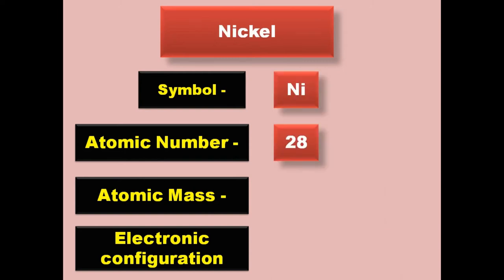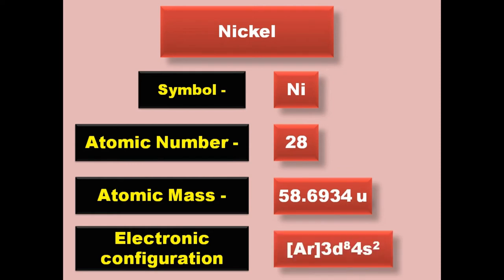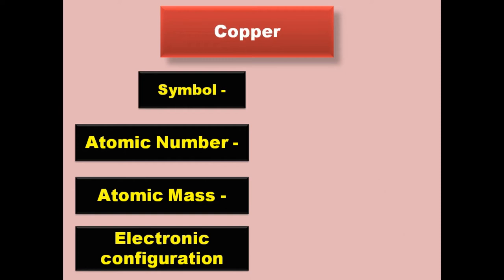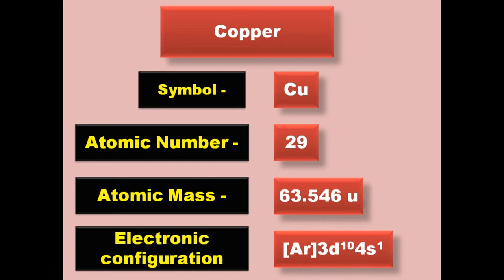Nickel has symbol Ni, atomic number 28, atomic mass 58.6934, electronic configuration [Ar] 3d8 4s2. Nickel is a transition metal and exists in solid form at room temperature.